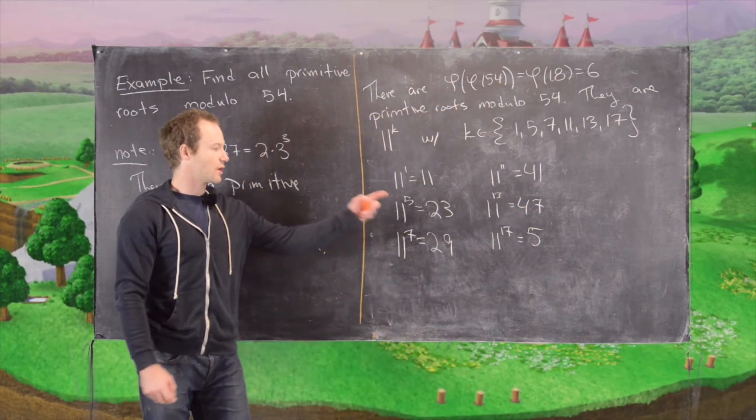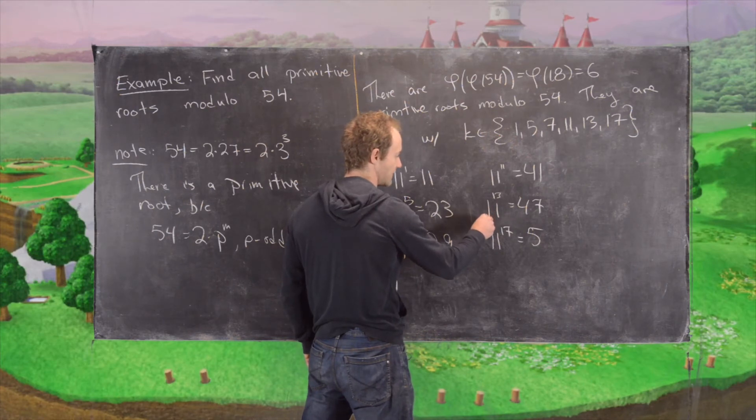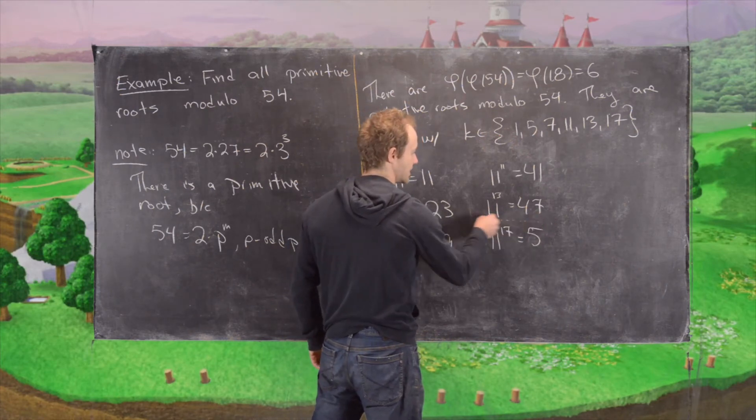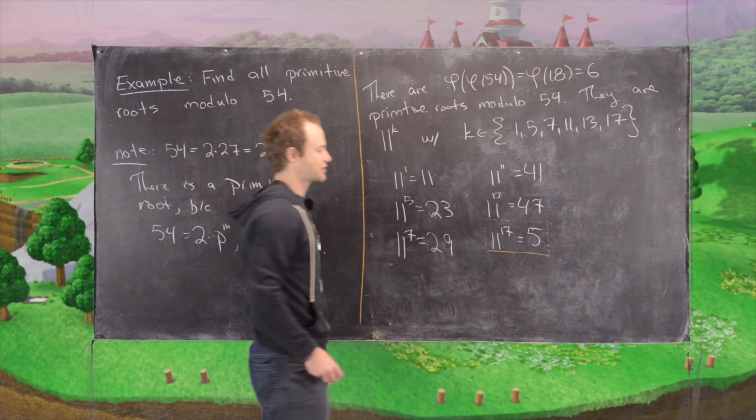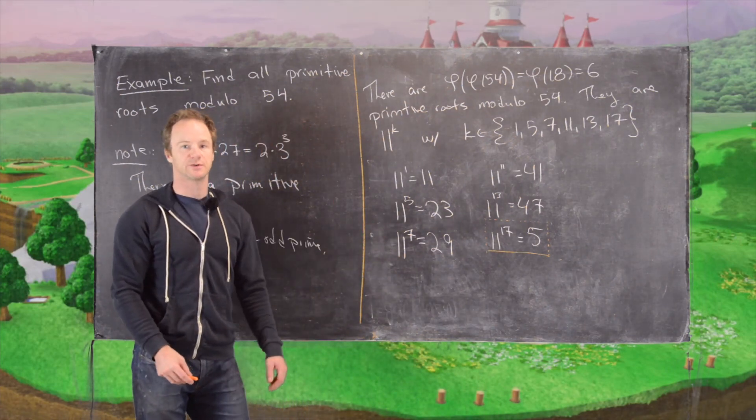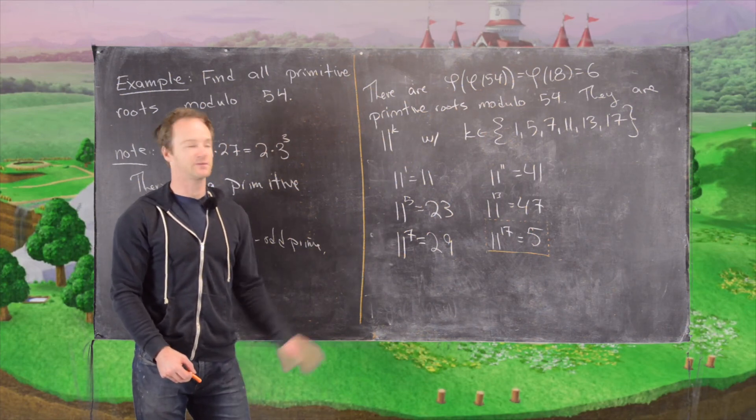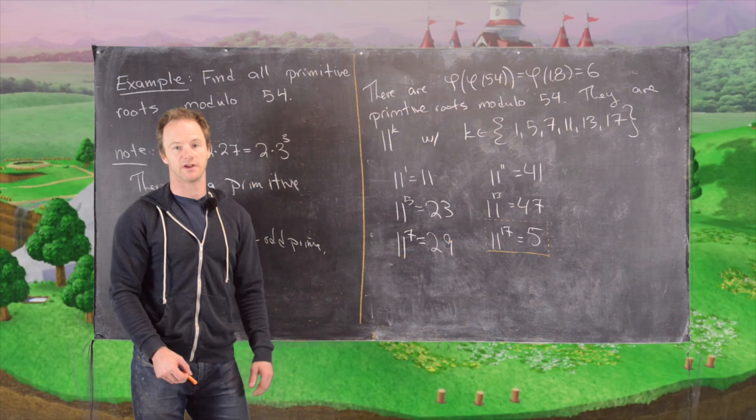Great. So in hindsight, maybe it would have been better to work everything off of our primitive root modulo 5. But that being said, the construction that we used, which was based off of some previous results, got us the primitive root of 11 first. Okay, so that's the end of this video.